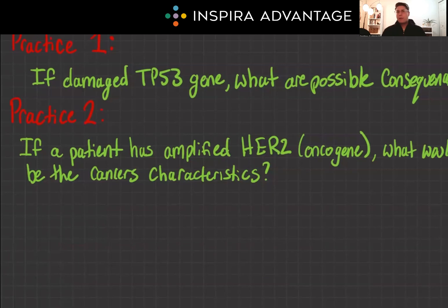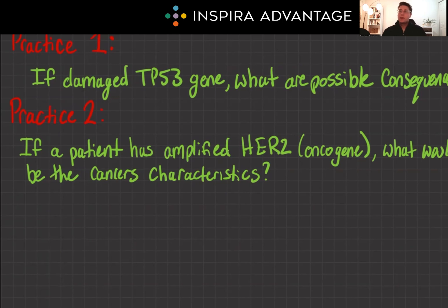Not good. How about if a patient has breast cancer with amplified HER2, which is a potent oncogene — what would be the potential impact on the cancer's characteristics? Well, if we amplify this oncogene HER2 in breast cancer, this is going to cause a more aggressive tumor. We're slamming on the gas — we're going to have rapid growth and a higher likelihood of metastasis.